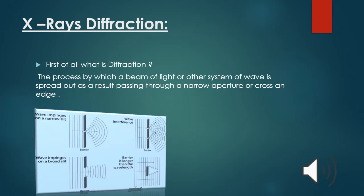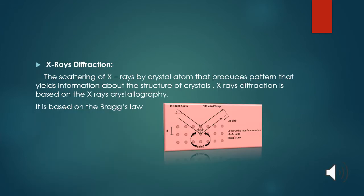Now the second topic is X-ray diffraction. First of all, what is diffraction? The process by which a beam of light or other system of waves is spread out as a result of passing through a narrow aperture or across an edge. This is the diffraction of wave. Two waves - it contains one slit. The second one contains two slits and wave is formed. Interference is produced. Constructive interference is produced when the barrier is longer than the wavelength.